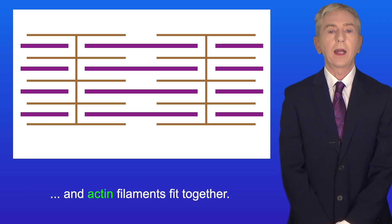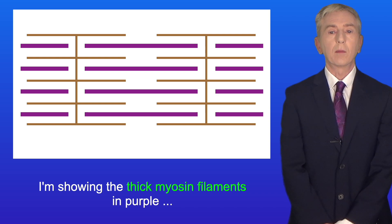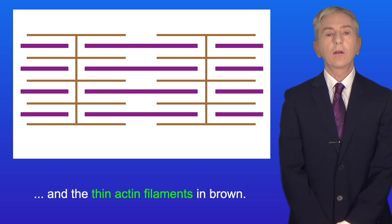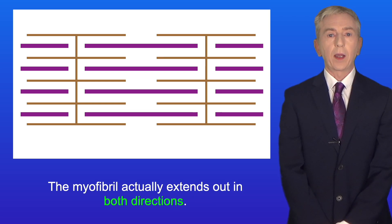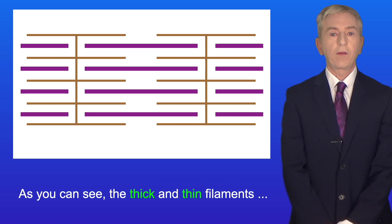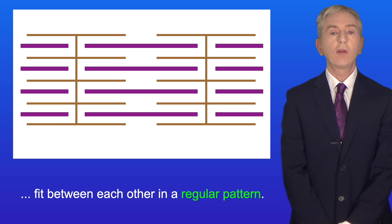I'm showing you here how the myosin and actin filaments fit together. I'm showing the thick myosin filaments in purple and the thin actin filaments in brown. Bear in mind that this only shows a small part of the myofibril. The myofibril actually extends out in both directions. As you can see the thick and thin filaments fit between each other in a regular pattern.